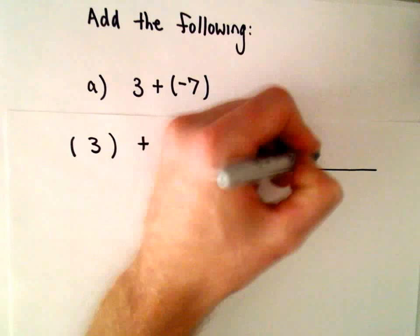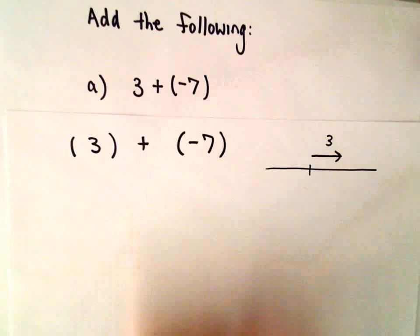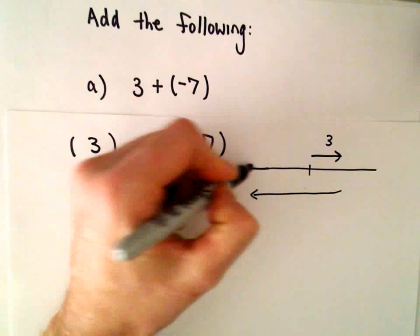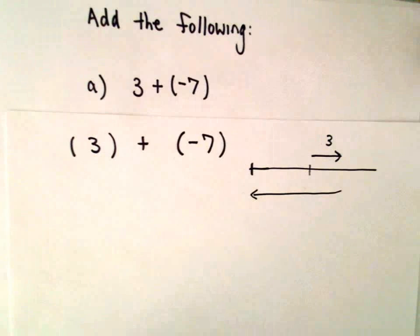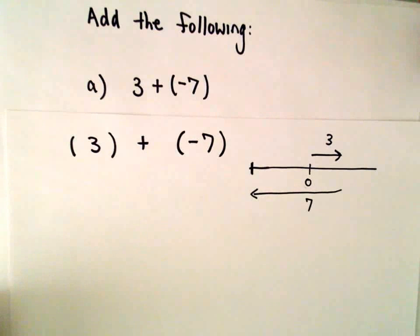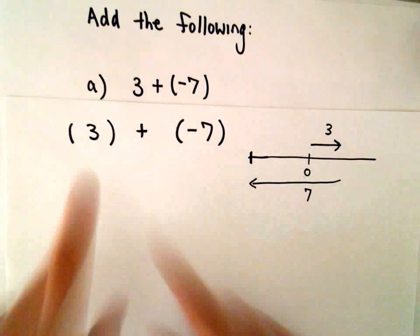So again, in terms of our number line, we're going 3 units to the right, and then we're going 7 units back to the left. And I think you could figure out where that puts you using our number line trick.